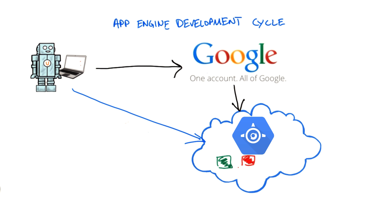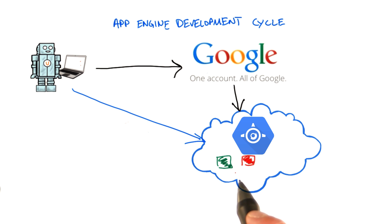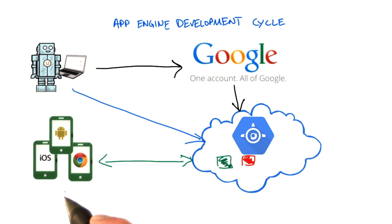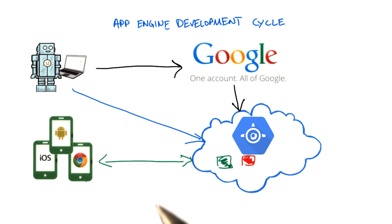And when you and your front-end developer friend have finished your application, you tell all your users about how cool it is, and that they can start using it. And when you use App Engine, it's very easy to support any kind of device and operating system — computers, smartphones, tablets, you name it.